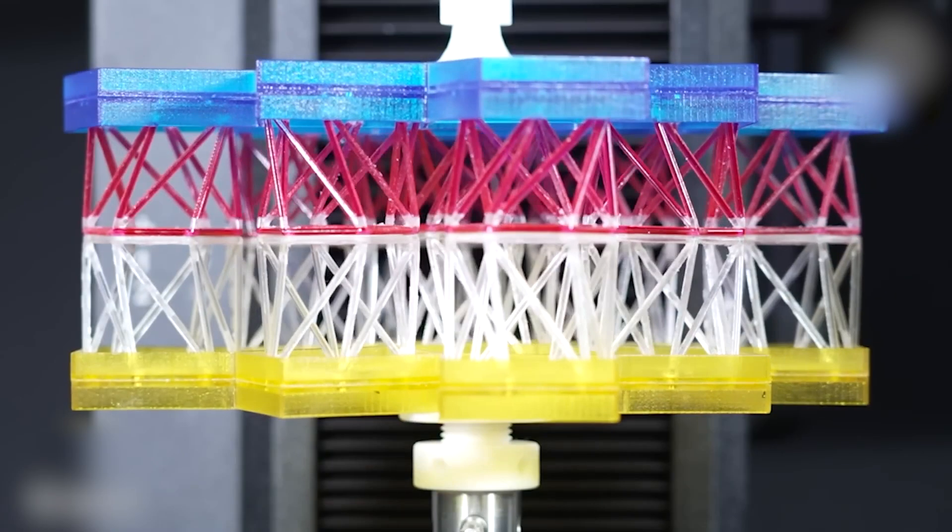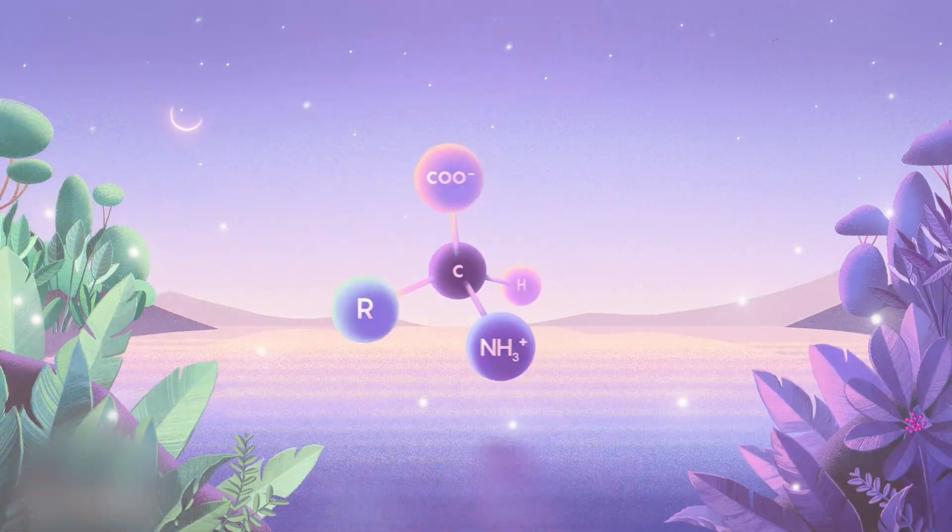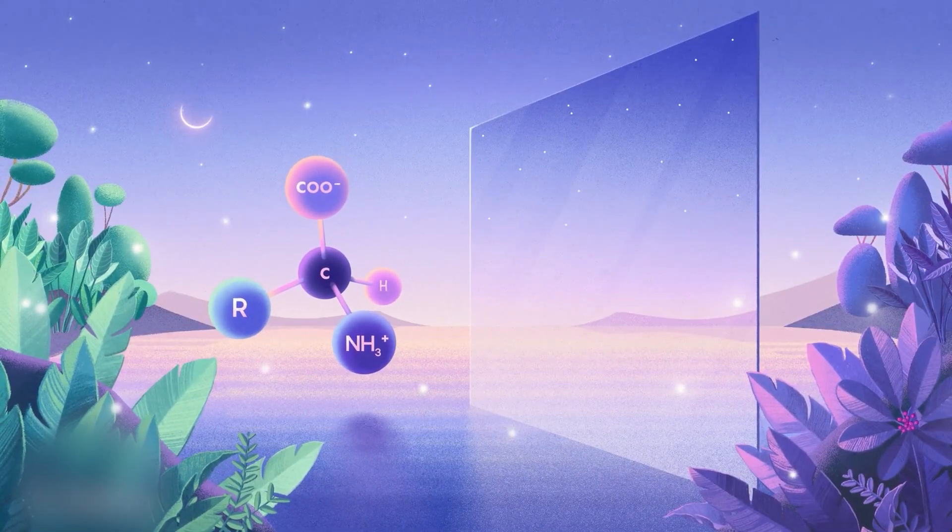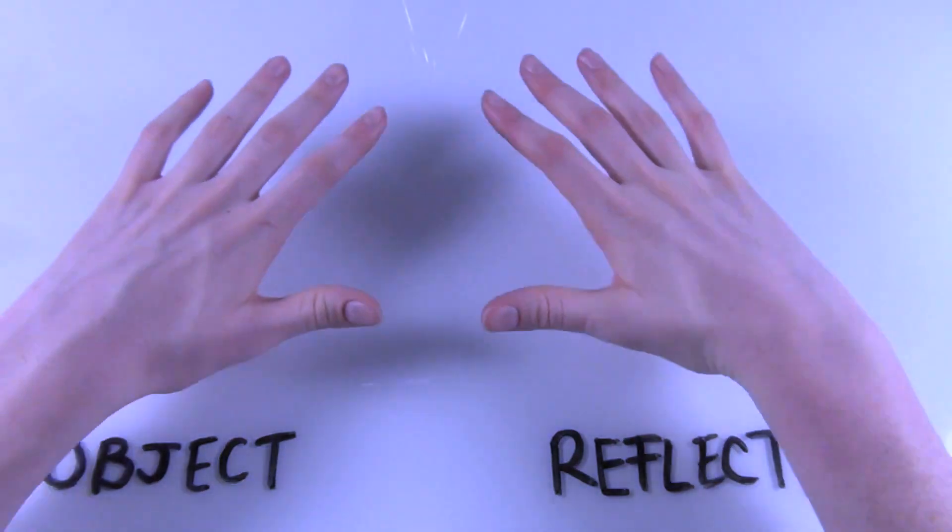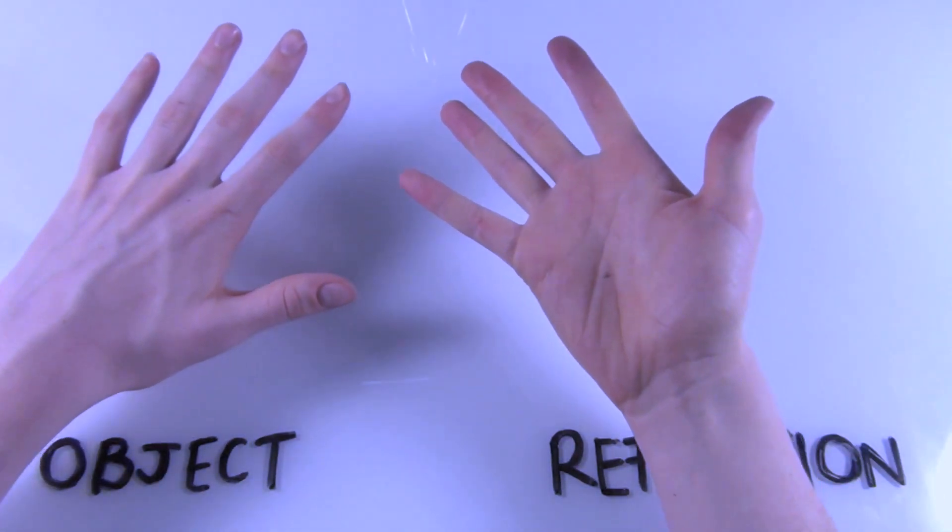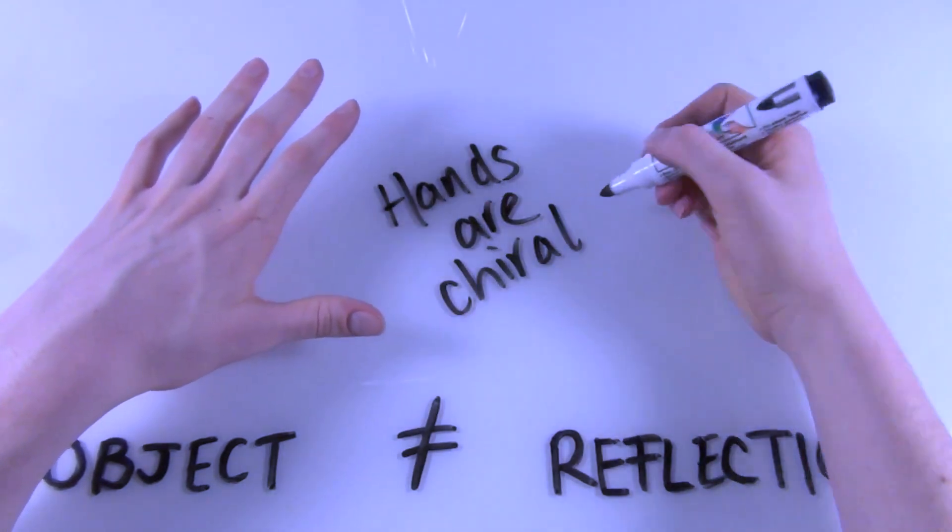Engineers at Princeton took this already clever geometry and gave it a twist, literally. They built the metabot using chirality, a fancy word that means the left and right versions of something are mirror opposites, like your hands. If you place a left-hand Kresling next to a right-hand one, and then apply a magnetic field, each one responds differently.